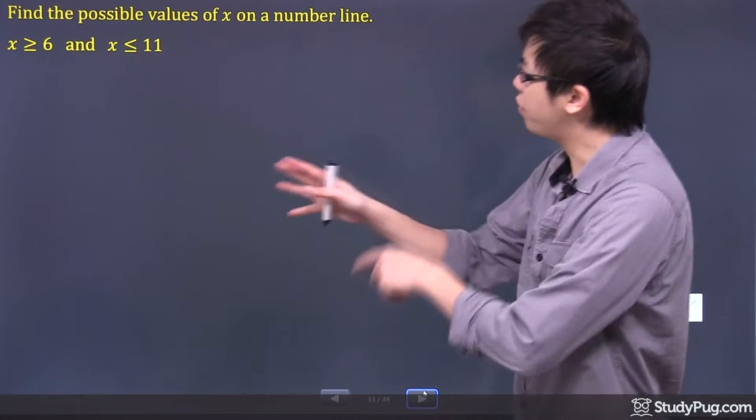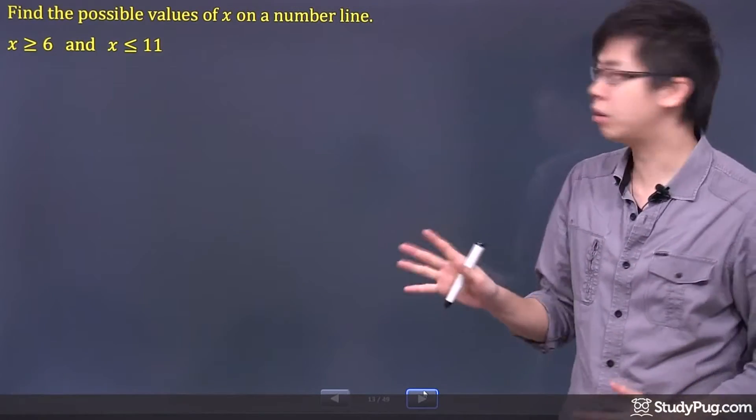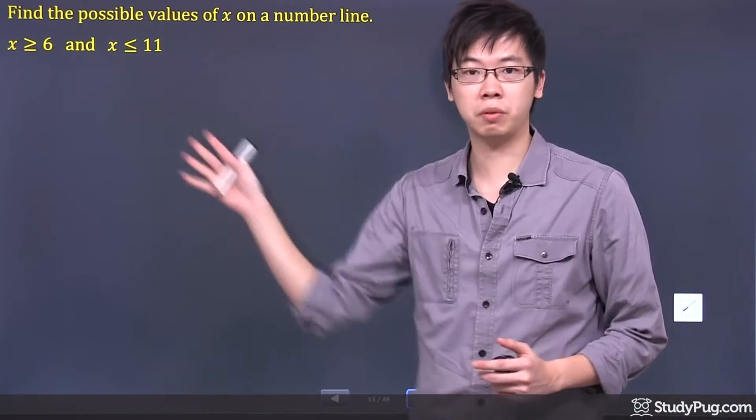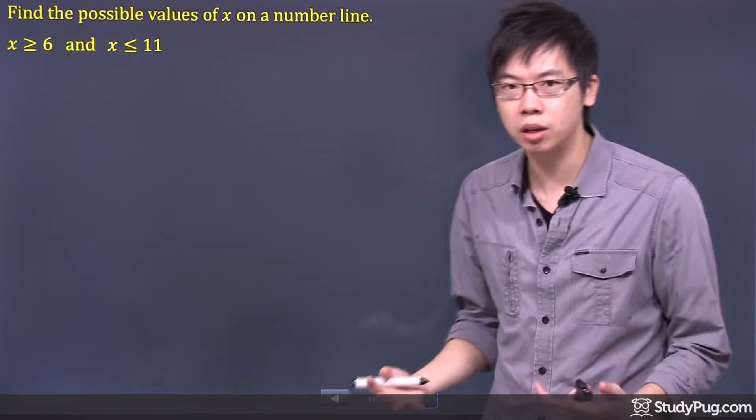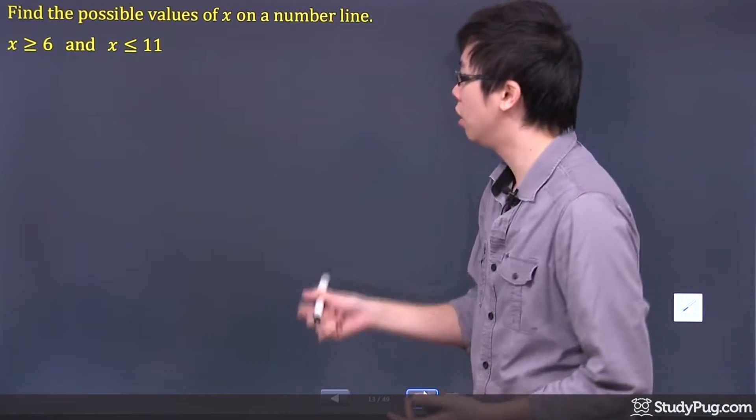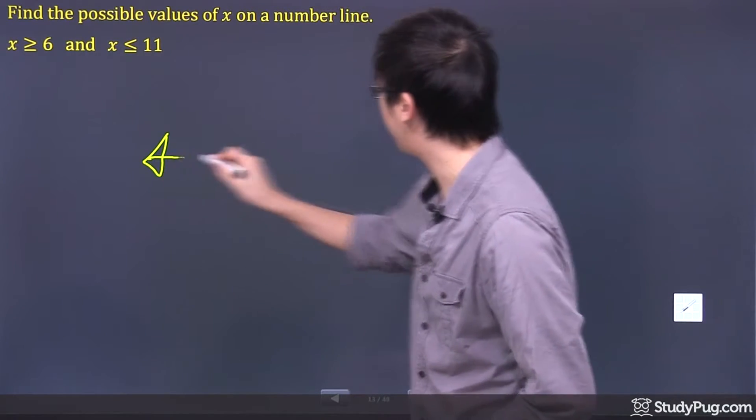Hi, welcome to this question right here. So we're trying to find all the possible values on the number line based on this one right here. So we're not actually going to calculate, we're actually going to draw it. So let's just start off with the number line right here.